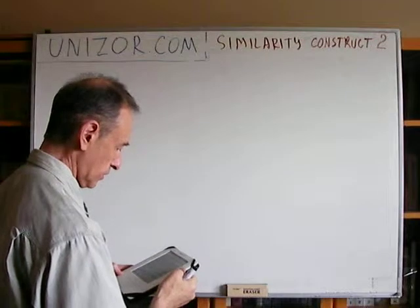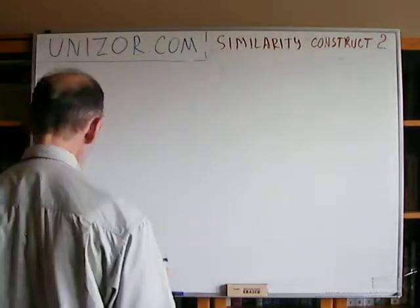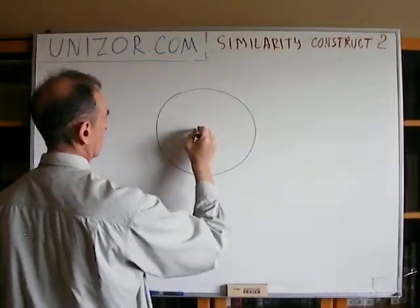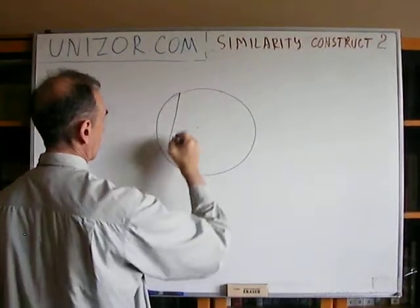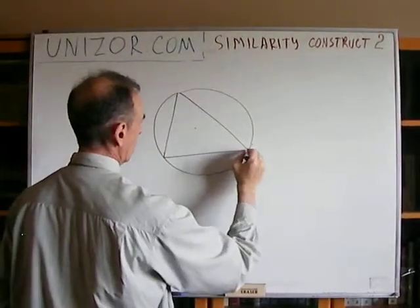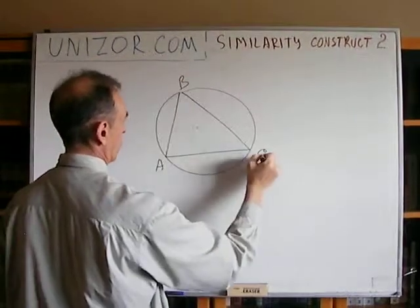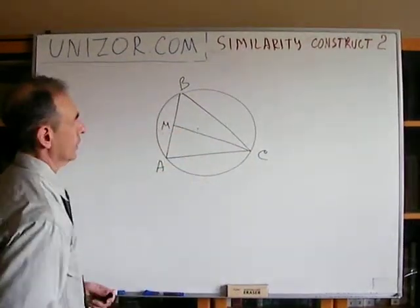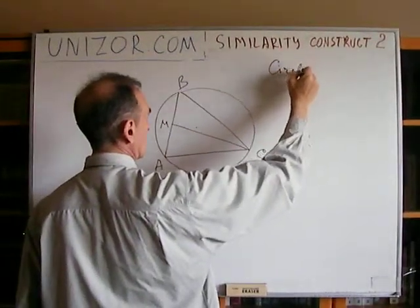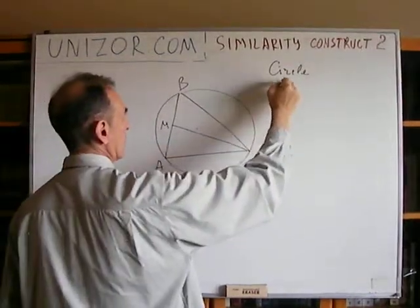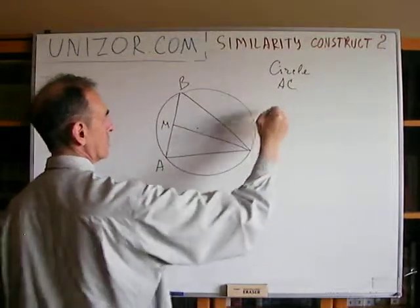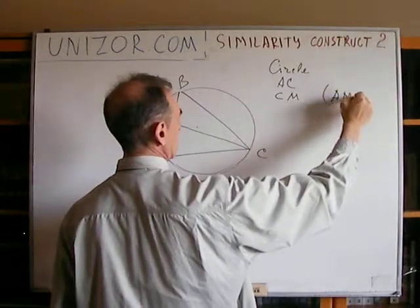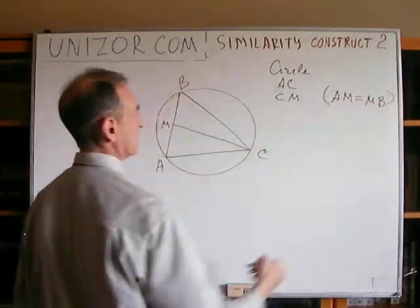Next problem: inscribe a triangle into a given circle by its one side and the median to the other side — that's slightly more difficult. Given: the circumscribed circle, side AC, and median CM, where M is the midpoint of AB, meaning AM equals MB.